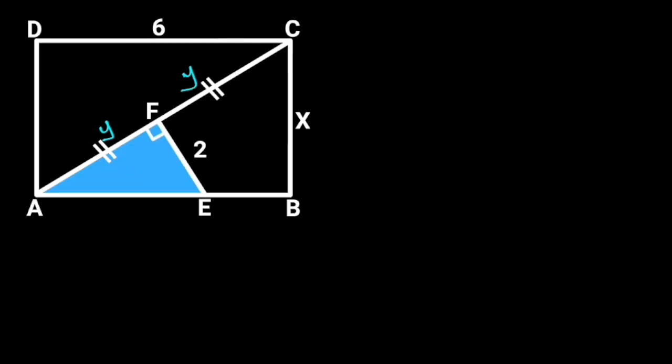Next, let's focus on triangle AFE. Since line EF is perpendicular to AC, it follows that triangle AFE is a right triangle. If we call this angle alpha, then the remaining angle of this triangle will be 90 degrees minus alpha.